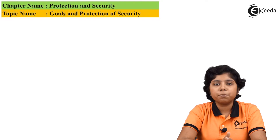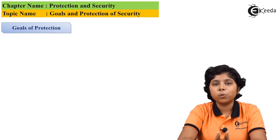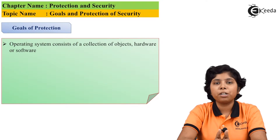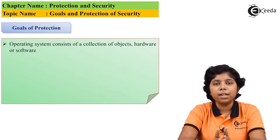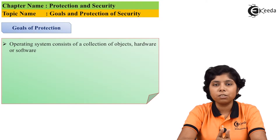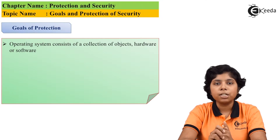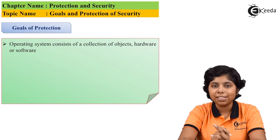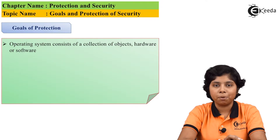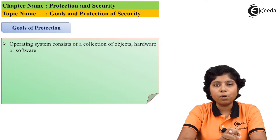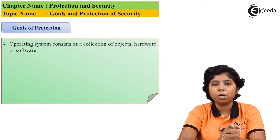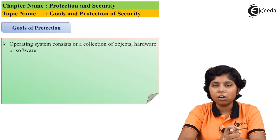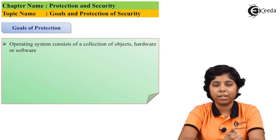As computer systems become more pervasive and inconsistent in their nature, the need for protection becomes increasingly important. In earlier times, protection was done by safely ensuring that users sharing the same logical structures like files, and physical structures like hard disk or memory. Nowadays, as multiprogramming environments become more constrained, sharing of data is being done in a more reliable and protectable way.